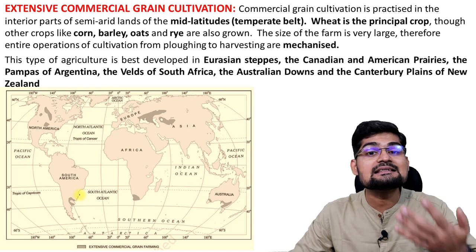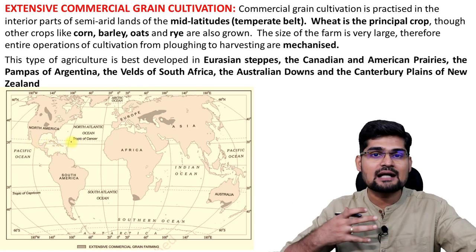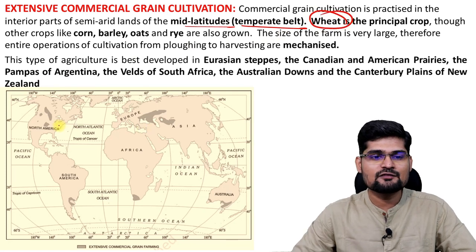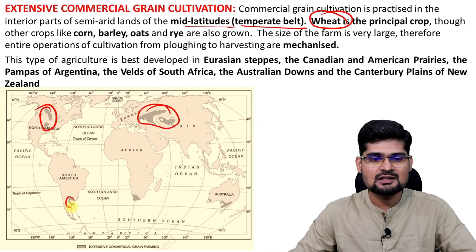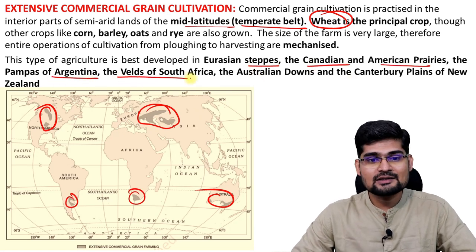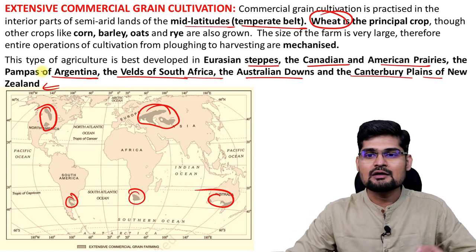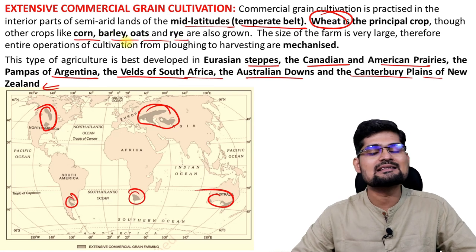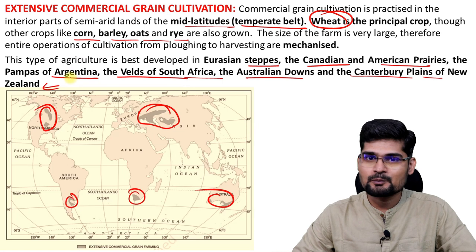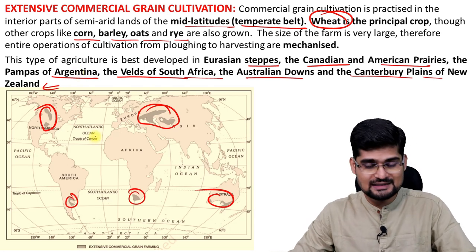Then comes extensive commercial grain cultivation. For this you need lots of capital, a huge tract of land, and technology. This is mostly in the temperate belt — mid-latitudes — where wheat is the principal crop. In the US area, some portions in Europe and Central Asia: Eurasian steppes, Canadian and American prairies, Pampas in Argentina, Veld in South Africa, Australian downs, and Canterbury plains in New Zealand. Corn, barley, and oats are also grown. This is done on a mechanization basis using tractors and threshers — from seed to harvesting is done in mechanized ways.